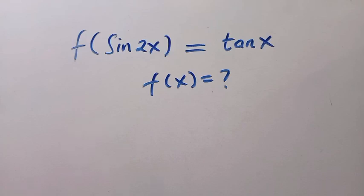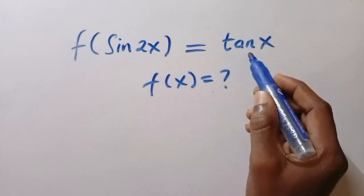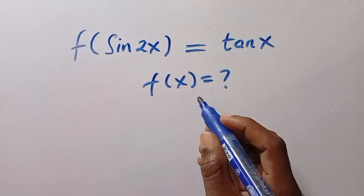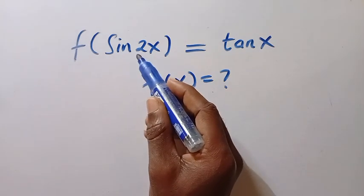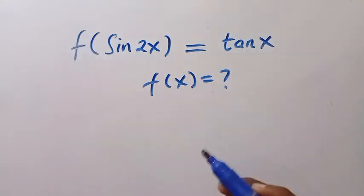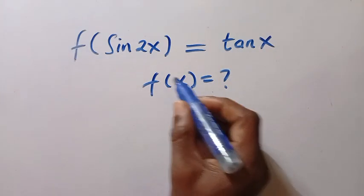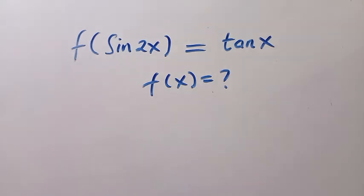Good day viewers, you are welcome. How to solve these nice functional equations given that f of sine 2x equals tan x, and what is f of x? Here is a trigonometry function where we have sine 2x as a double angle. We are interested to find something different from trigonometry, which is only f of x. To solve this is very simple, as I'm going to be solving this in a very simple method. So let's get into it.